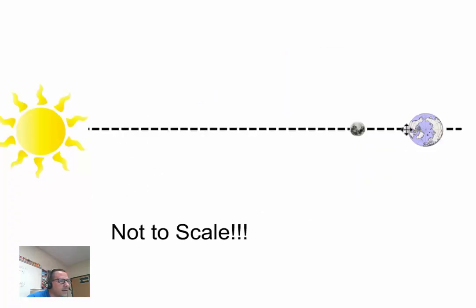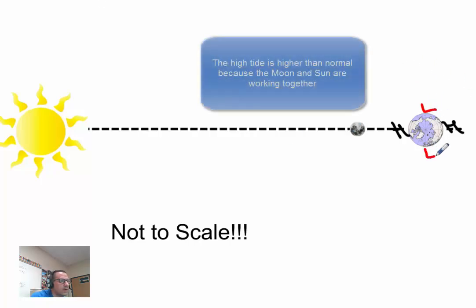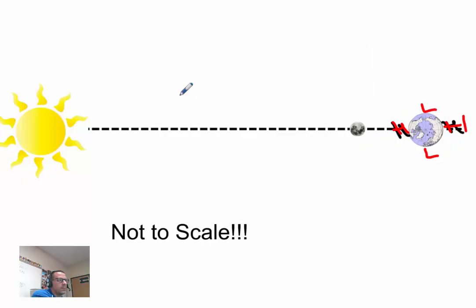So this high tide that we have right here, we're going to have a high tide right up here. And a low tide right there. This high tide is going to be a little higher than normal. And this low tide is going to be just a little bit lower than normal.